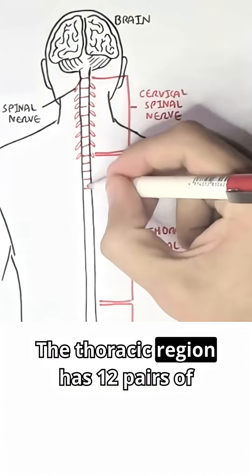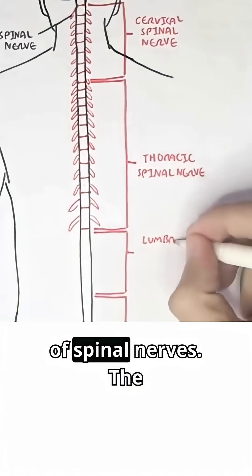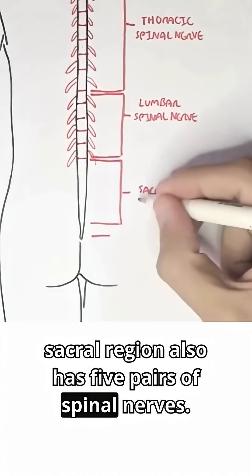The thoracic region has 12 pairs of spinal nerves. The lumbar region has five pairs of spinal nerves. The sacral region also has five pairs of spinal nerves.